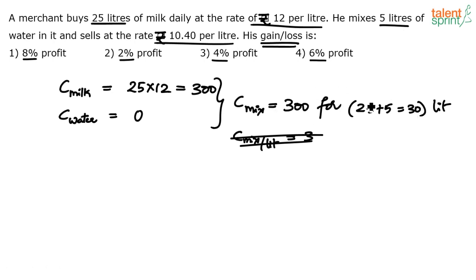The cost of total mixture is ₹300. He sells at the rate of ₹10.40 per liter. So what is the selling price of the mixture? 10.4 per liter, and how many liters? 30 liters. 10.4 × 30—we're calculating for 30 liters—so 10.4 × 30 is ₹312.